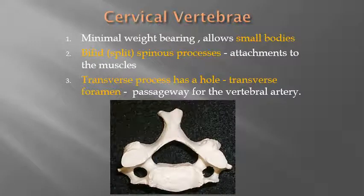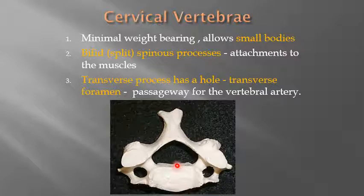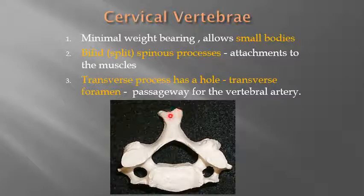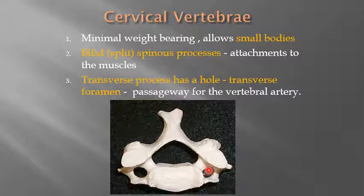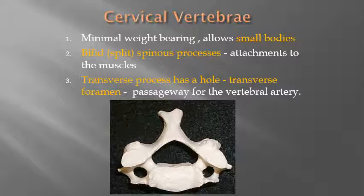Here's a cervical vertebra. Since the cervical vertebrae are not weight-bearing, they have a very small vertebral body. They also have what's called a bifid spinous process — the spinous process has kind of a split, or forked, appearance, unlike the straight spinous processes of other vertebrae. The other unique thing about the cervical vertebrae is that the transverse processes have a hole called the transverse foramen. When you see a transverse foramen, you know right away that it's a cervical vertebra — they are the only vertebrae that have these holes in the transverse processes, which serve as a passageway for the vertebral arteries.